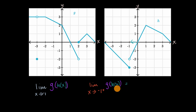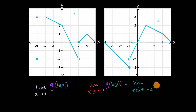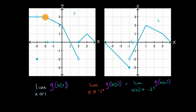So another way to think about it: this is going to be equal to the limit as h of x approaches negative two. And what direction is it approaching negative two from? It's approaching negative two from values larger than negative two — h of x is decreasing down to negative two as x approaches negative one from the right. So this is analogous to asking what is the limit as x approaches negative two from the positive direction of g, since h is just the input into g, and the input is approaching negative two from above.